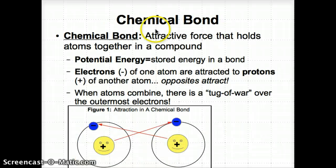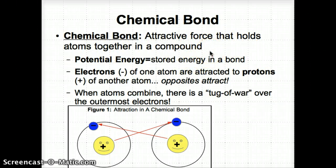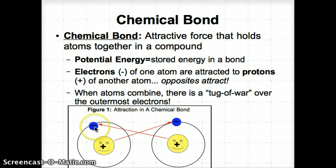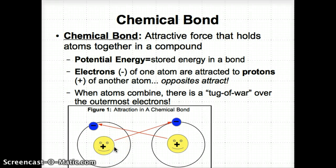Now let's talk about what chemical bonds actually are. Chemical bonds are attractive forces that hold atoms together in a compound, like NaCl or sodium chloride. You can think of it as glue holding two atoms together. The energy involved is potential energy, which is the energy stored in that bond. Electrons outside the nucleus of one atom attract to the protons inside the nucleus — opposites attract.